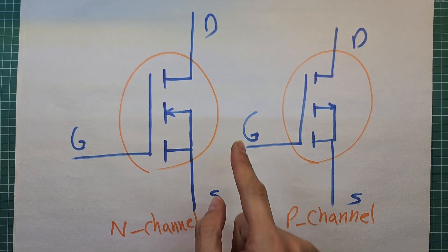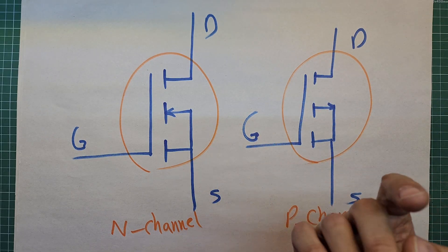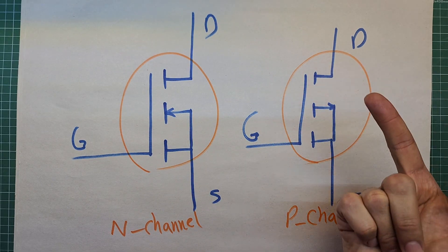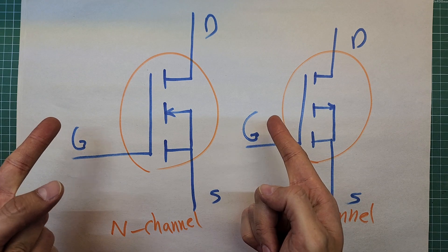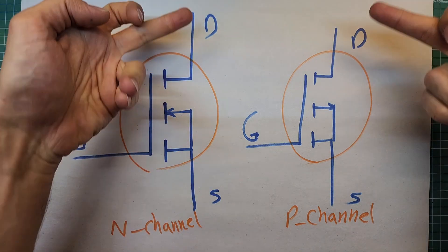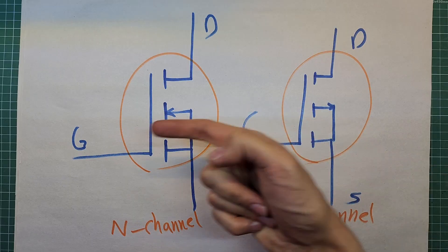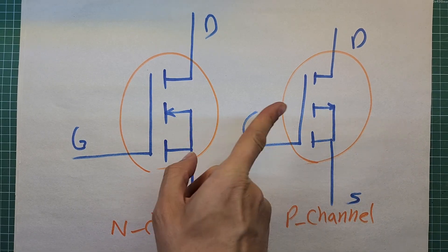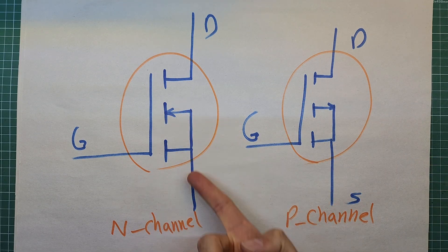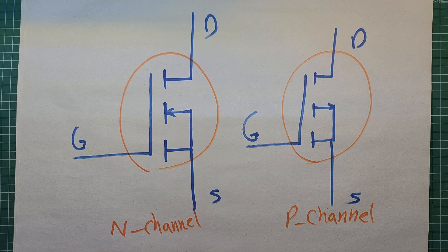This is the schematic symbol of an N-channel MOSFET, and this one is for a P-channel. MOSFETs are three-pin components with pins named gate, source, and drain. Applying a proper voltage to the gate pin relative to the source pin turns the device on and lets current pass through the source and drain. If the arrow is inward it's an N-channel; if outward it's a P-channel. The arrow is always connected to the source pin.